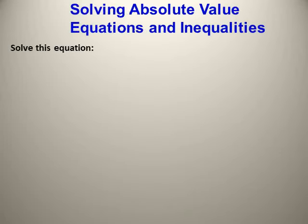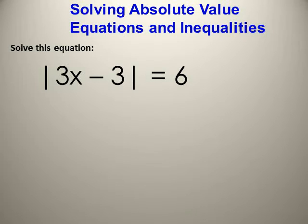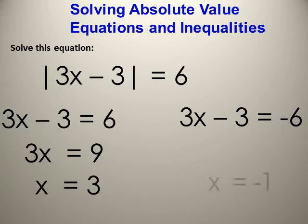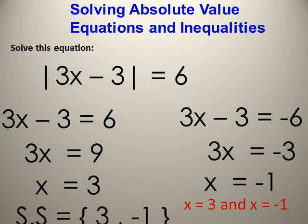Solve |3x − 3| = 6. If the absolute value equals 6, that means inside may be equal to 6 or negative 6. So 3x − 3 = 6 or 3x − 3 = −6. First equation: 3x = 9, so x = 3. Second: 3x = −6 + 3 = −3, so x = −1. To verify: 3(3) − 3 = 6 ✓, and 3(−1) − 3 = −6, absolute value equals 6 ✓.